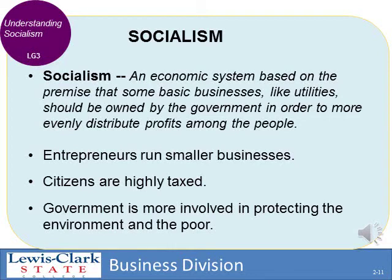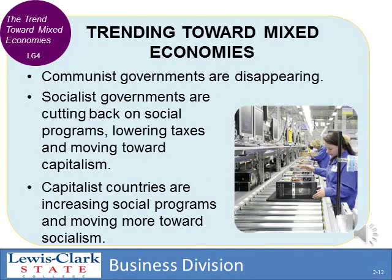With true capitalism, every market is a free market, and there are very few nations that have that anymore. Even the United States is kind of a mixed economy because the government controls and regulates some aspects of business. This leads us into socialism — an economic system in which small businesses can be run by entrepreneurs, but larger businesses like utilities and some production are owned by the government. Within socialism, citizens are taxed very highly and the government makes many decisions about health and other economic matters. Beyond socialism is communism, where the government makes all economic decisions. Communist governments are largely disappearing, and socialist governments are becoming more capitalistic while capitalist countries are becoming a little more socialist — so we're all kind of merging in the middle.